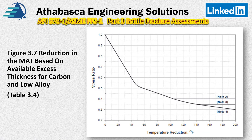We're going to look at figure 3.7. It's really important when we do our evaluation — it's sort of the heart and lungs of the evaluation. There's some complexity associated with these curves that you should be aware of. They're based upon the available excess thickness for carbon and low-alloy steel, so there are limitations: you can't use it for stainless steels, for example. If you go to section 3.4, you'll see all the equations for this, because in level two assessments there's a lot of math to do. There's also online software that uses these equations.